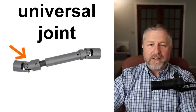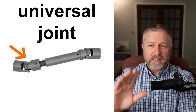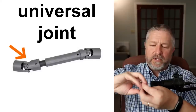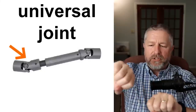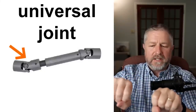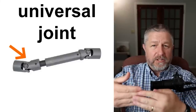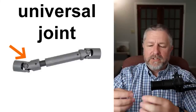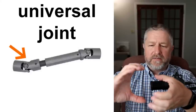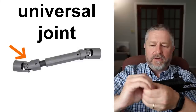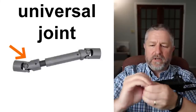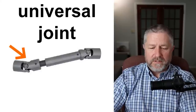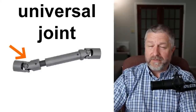Universal joint. A universal joint is a special joint that allows two shafts to connect at an angle, and that angle can change without breaking anything. It's kind of like doing this with your hands — you can turn but also go in every direction, so it's universal. If you don't think you have one, you do on your vehicle somewhere.